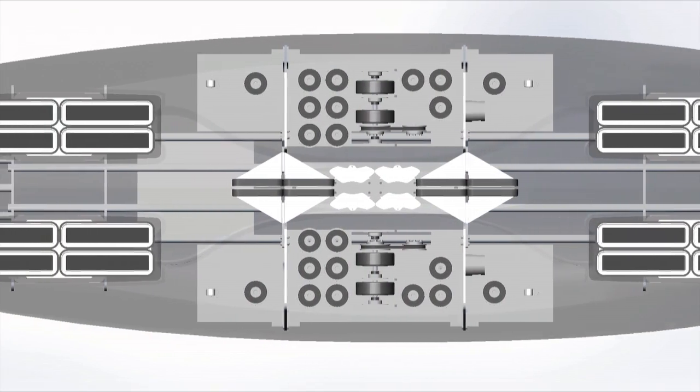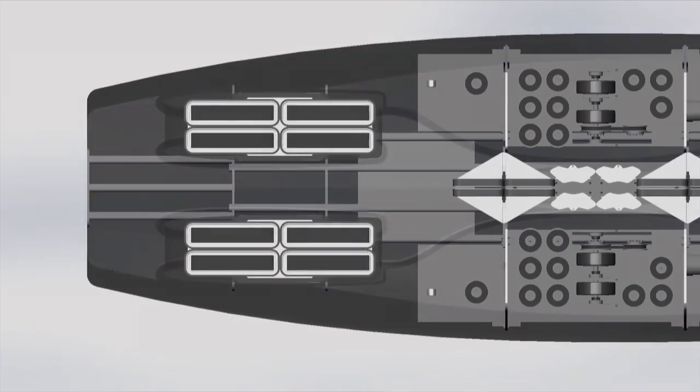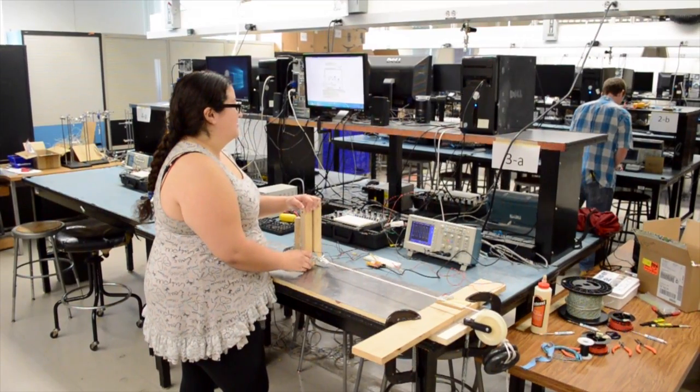Our braking system is double fault tolerant. Our primary form of braking is electromagnetic, which uses eddy currents. And our second form is mechanical, which uses brake pads and calipers.